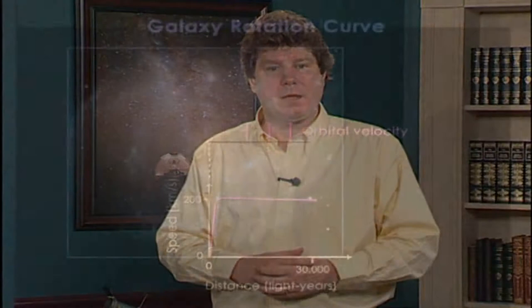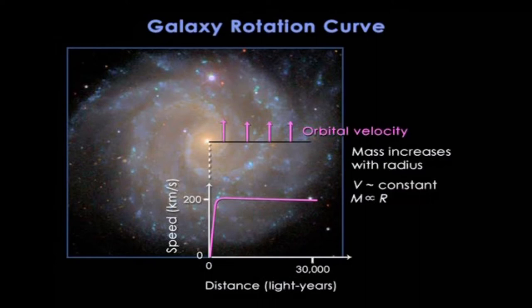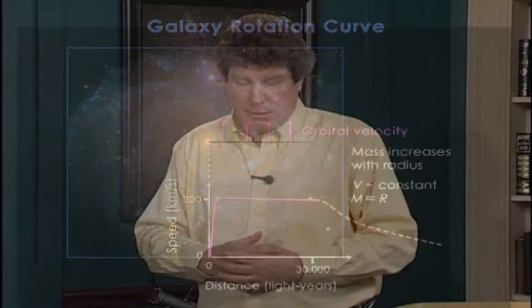Here's a typical rotation curve for a galaxy — it stays high at all radii. If you calculate the mass within each radius, you find it increases as you go out, because masses are spread throughout the galaxy. But, and this is the important part, if you could measure orbital speeds outside the galaxy, they should drop off, just like the solar system. You're now outside the galaxy, so the orbital speeds should drop.